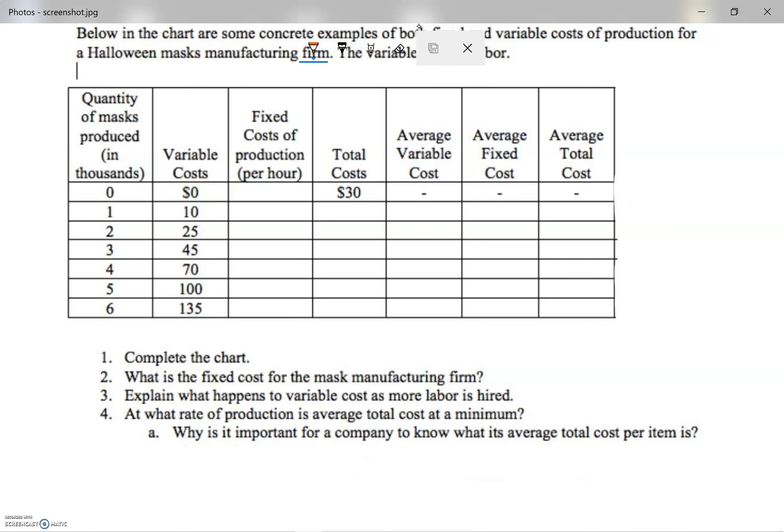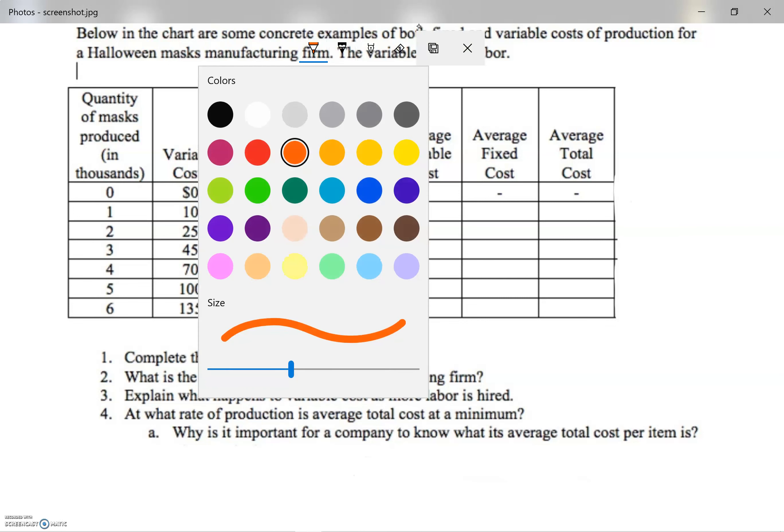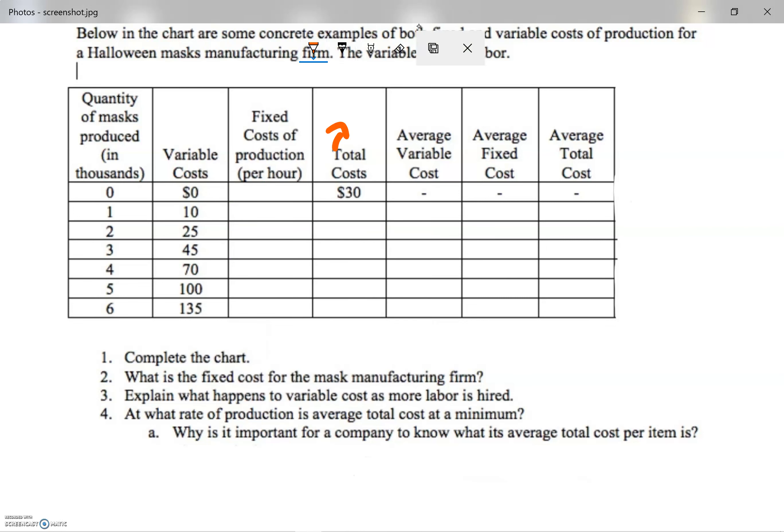As we know, fixed cost - they didn't give me anything but I can find it. I have the total cost given, and as I know, the total cost is fixed cost plus variable cost. So zero plus what will give me 30? This would be 30. If it's 30 for zero units, no matter what, remember it should be 30 for all of the quantity of masks produced. So very easy, I will start putting 30, 30, 30, 30, 30.